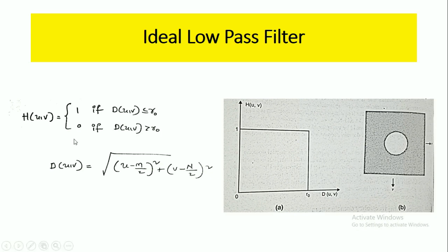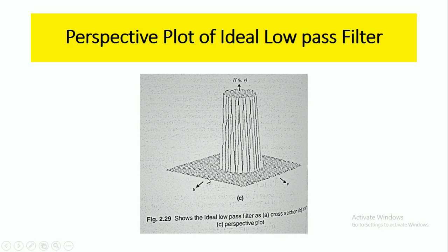If the distance of the frequency component is greater than the cutoff frequency, the transfer function is zero. The distance D(u, v) is given as the square root of (u − M/2)² + (v − N/2)². This is the perspective plot of the ideal low pass filter, and the filter is considered radially symmetric about the origin.